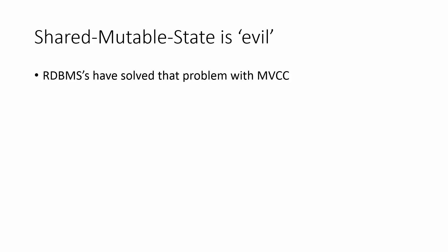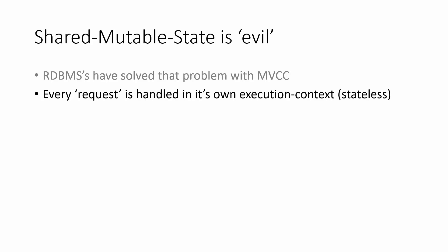Shared mutable state is evil. But the database is a store of shared mutable state, and everybody uses databases. Some relational database management systems have solved that problem using what's called multi-version concurrency control (MVCC), which basically means that each execution context — say, a request in the application server — has its own view of the data in the database. If anyone else changes something in the database while the request is in flight, it will not change how that request views the data it sees.